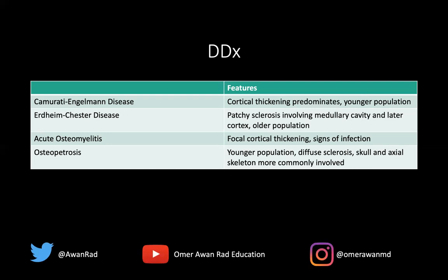Osteopetrosis is a skeletal dysplasia that happens typically in the younger population, just like our patient, but often the skull and axial skeleton are more commonly involved. You can get skull involvement in Camurati-Engelmann disease, but typically in osteopetrosis you'll see spine involvement — diffuse sclerosis within the entire vertebral body, the bone-in-bone appearance. Osteopetrosis can be autosomal dominant or autosomal recessive, whereas Camurati-Engelmann is autosomal dominant with variable penetrance. The distribution is a key differentiator between the two.